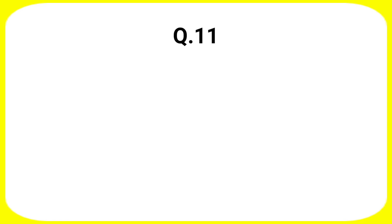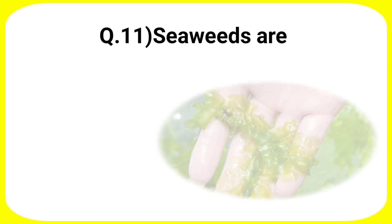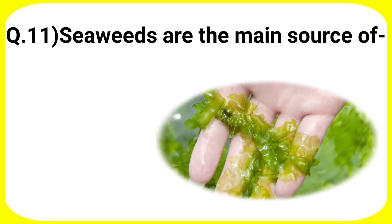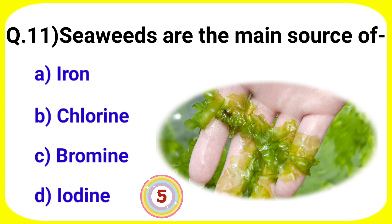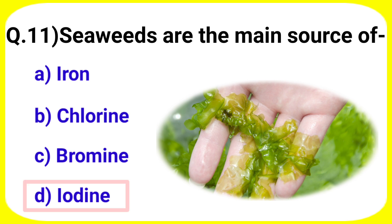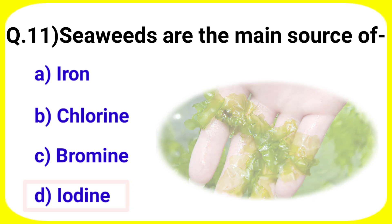Next question: Seaweeds are the main source of — your options are A. Iron, B. Chlorine, C. Bromine, D. Iodine. Answer is option D. Iodine.